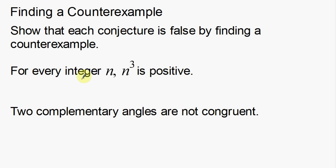Starting out with the vocabulary: integers are numbers like negative 3, negative 2, negative 1, 0, 1, 2, 3, and so on — in both directions. Your whole numbers that are both positive and negative. So those are integers.